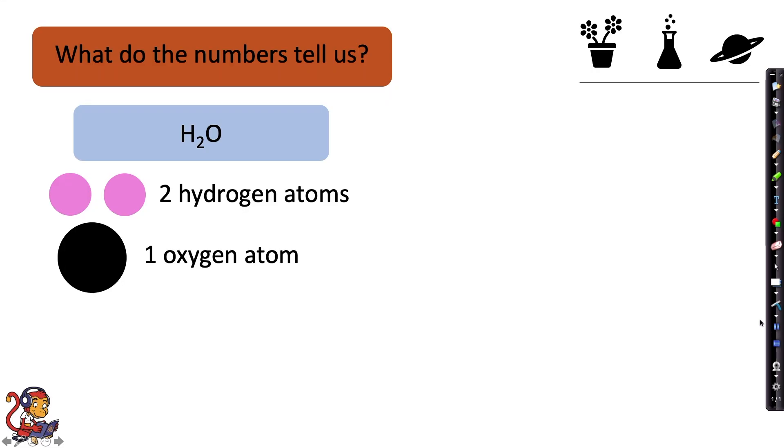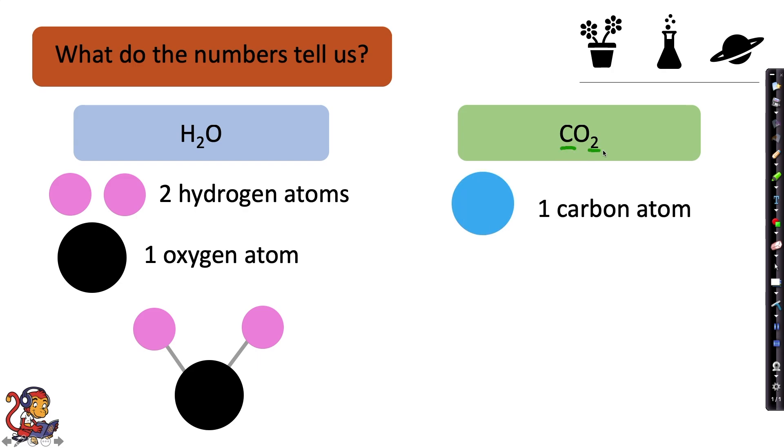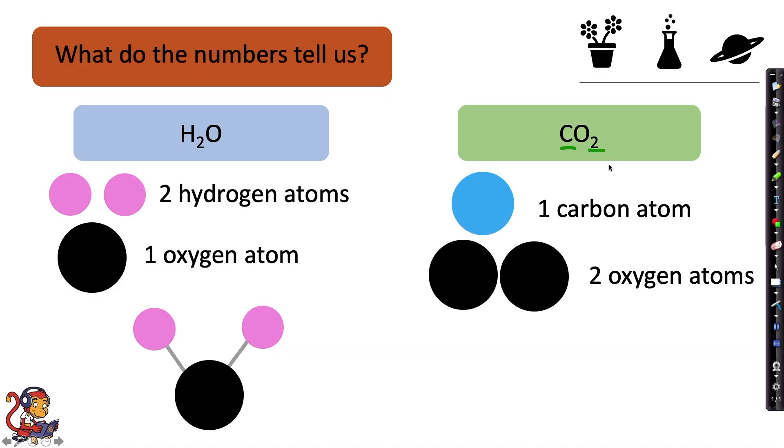So when they're bonded together, it might look something a little like this. Let's take CO2 as another example. This chemical formula shows us that CO2 carbon dioxide has one carbon atom and two oxygen atoms. So when they bond together, the molecule may look something like this.